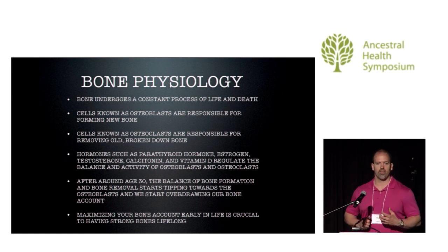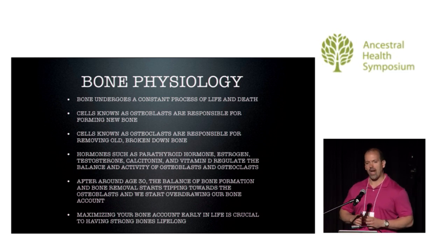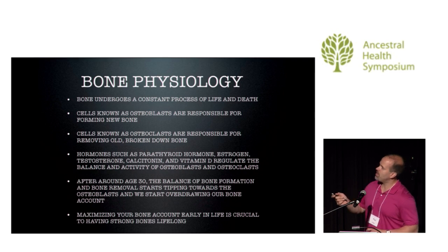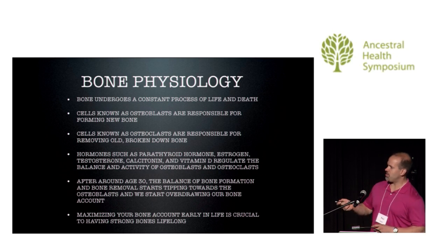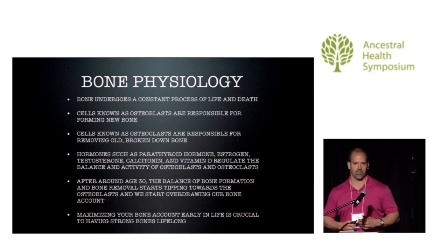In bone, there's a constant process of life and death — bone is constantly being built and destroyed. Osteoblasts are cells responsible for forming new bone, while osteoclasts break down and remove old broken-down bone. This balance is governed by hormones like parathyroid hormone, vitamin D, estrogen, calcitonin, and testosterone. Around age 30, most of our bone mineral density has been built up — about 90% by age 20. After that, the scale tips toward osteoclasts and we start overdrafting our bone account. So a big thing is to maximize your bone account very early in life to ensure strong bones lifelong.